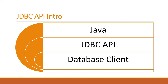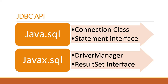JDBC is part of the Java Standard Edition platform. It provides universal data access from the Java programming language — using the JDBC API you can access virtually any data source, from relational databases to spreadsheets and flat files. This Java database technology also provides a common base on which tools and alternate interfaces can be built.